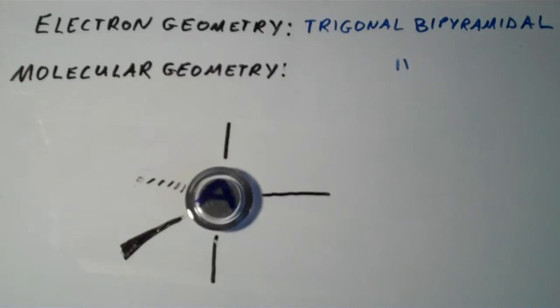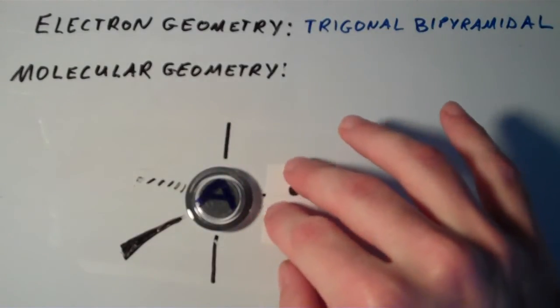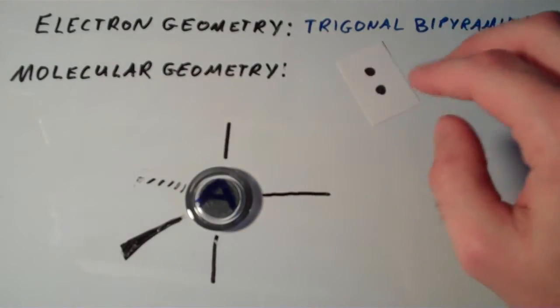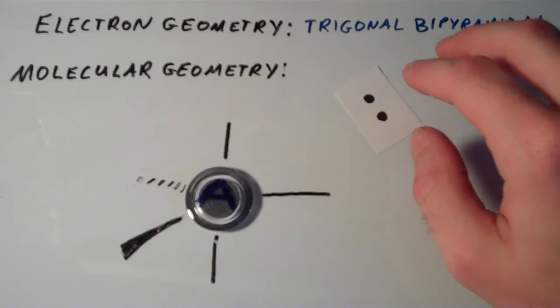But what if we have one lone pair? In this case, it's actually interesting because the lone pair could either occupy an axial position or it could occupy an equatorial position. So which does it occupy, the axial position or the equatorial position?